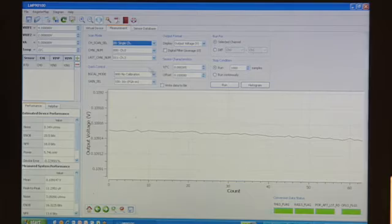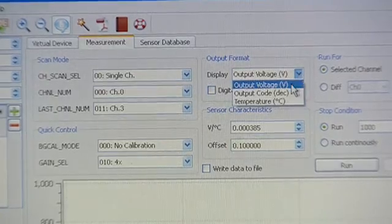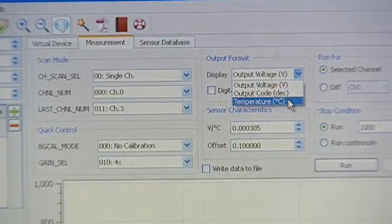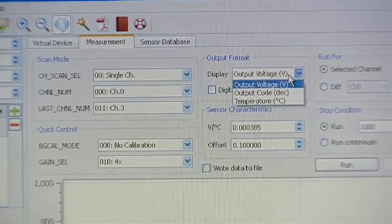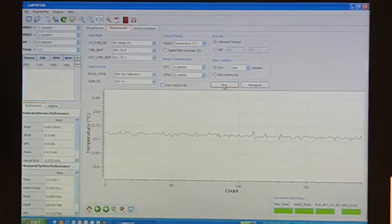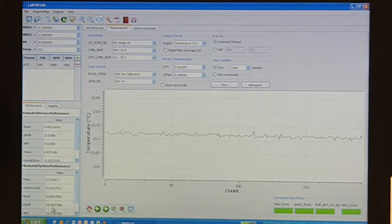You also have the choice of monitoring the system performance in terms of voltage, ADC output codes, or sensor units such as degrees Celsius or Fahrenheit for temperature sensing.